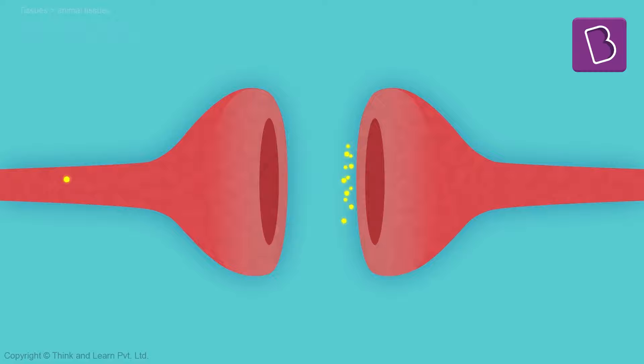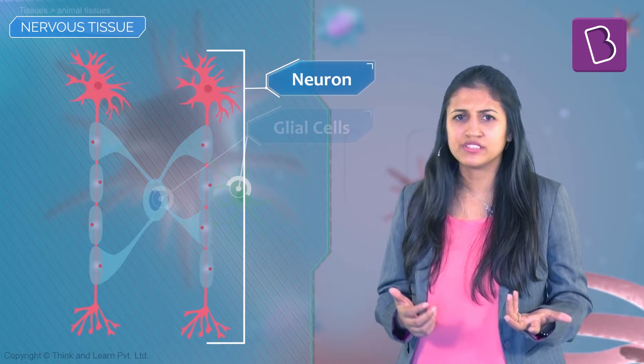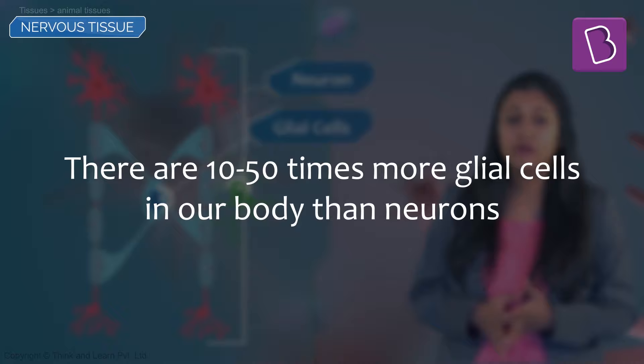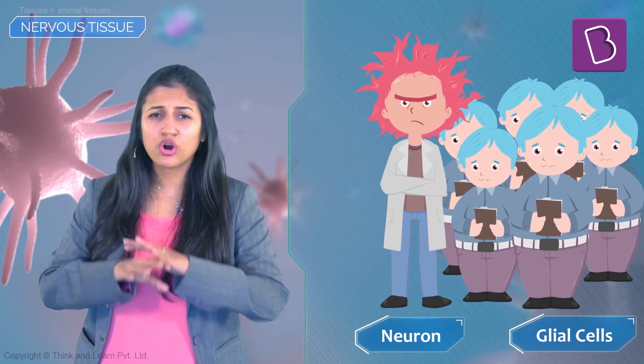What about glial cells? They aren't as famous as neurons — all the attention is stolen by nerve cells. No one even talks about glia, which is the plural for glial cells. But the fact is that there are 10 to 50 times more glial cells in our body than nerve cells, and neurons cannot even function properly without them. They are like the personal secretaries of the neuron, doing a lot of chores, and hang around in bunches all around the nerve cells.